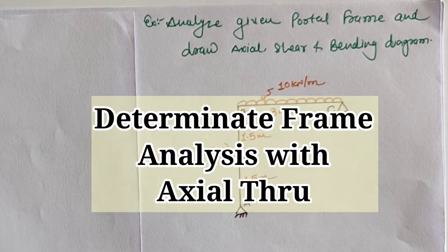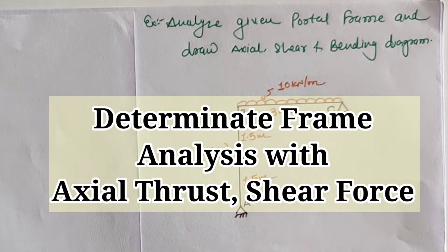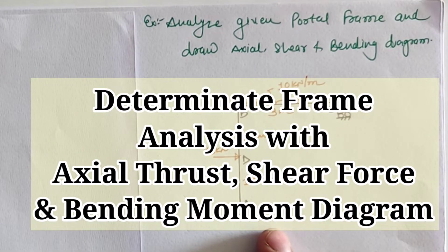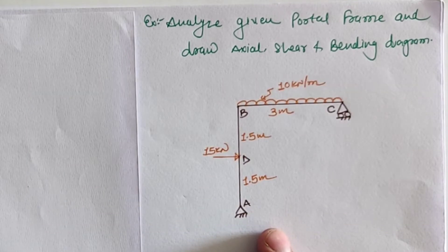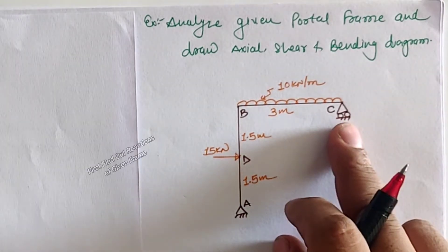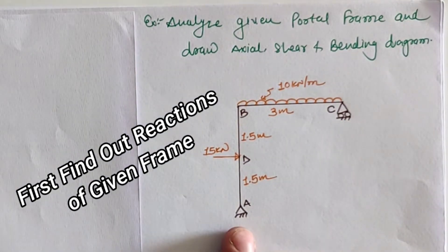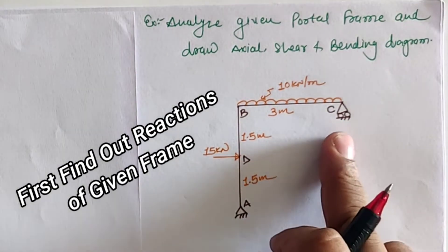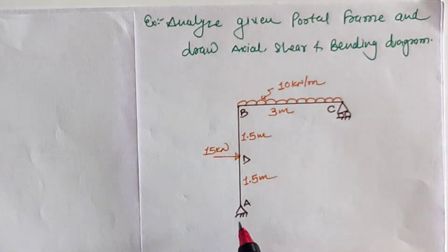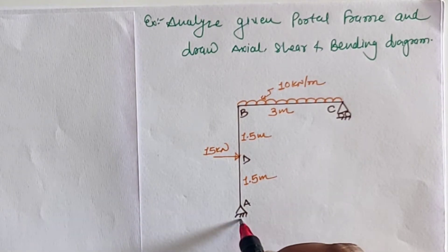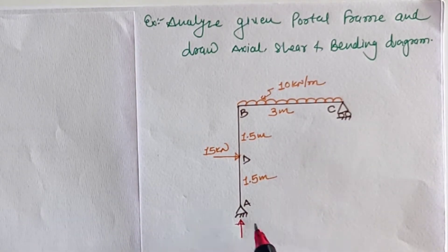Hello friends, today we are going to analyze the given portal frame for the calculation of axial thrust, shear force, and bending moment. First of all, for any given determinate frame structure, the first step is to find out the reactions at the supports. At a hinge support we will have one vertical reaction and one horizontal reaction.